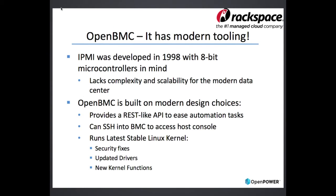OpenBMC has modern tooling. Compared to IPMI, which was developed in 1998 with 8-bit microcontrollers in mind, IPMI lacks the complexity and scalability for the modern-day data center. OpenBMC accounts for this by making modern design choices. To start with, OpenBMC has a REST API to ease automation tasks, so you can make targeted, direct REST API calls to get exactly the parameters you need. You don't have to run a very generic tool like IPMI tool, get a bunch of text, and parse it — you can just make directed calls. That's a big advantage.